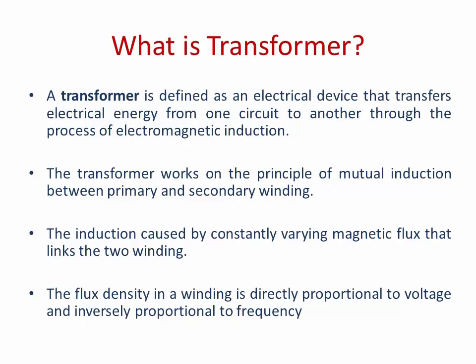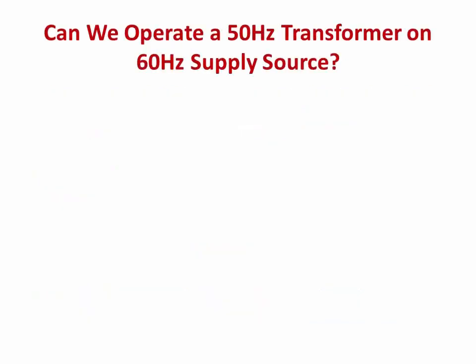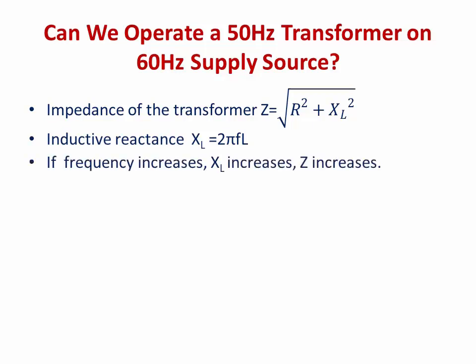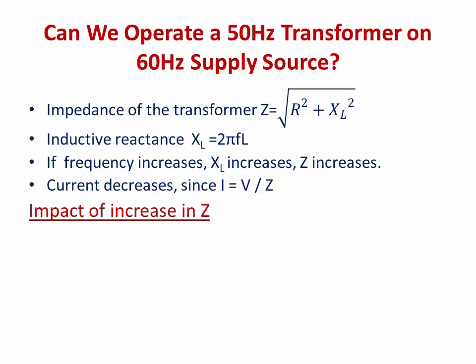The flux density in a winding is directly proportional to the voltage and inversely proportional to the frequency. Now, can we operate a 50 Hz transformer on a 60 Hz supply? The impedance of a transformer is based on resistance and inductive reactance XL. The inductive reactance XL depends on frequency — it is 2πfL. If frequency increases, inductive reactance increases, which increases the impedance of the transformer, thereby decreasing current flow since I = V/Z.